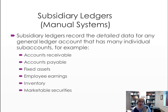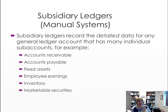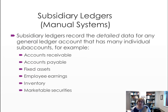We also have subsidiary ledgers for accounts where we need more detailed information. For accounts receivable, it's not enough to know customers owe us $10,000 total — we need to know who owes what and how long each balance is past due. Similarly, accounts payable and fixed assets have subsidiary ledgers. For payroll, we need to know how much each employee earned during the year for federal reporting. Inventory tracks how many parts we have of each item, and marketable securities are tracked as well.